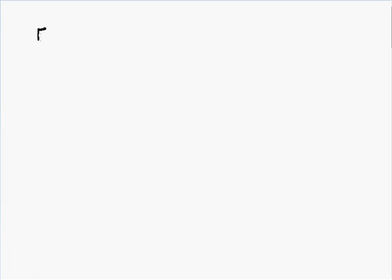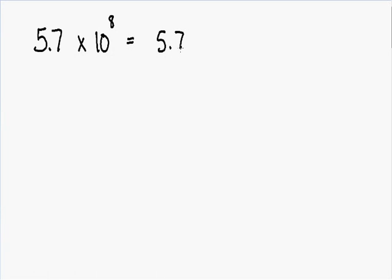First, let's take a number that is in scientific notation and convert it into a regular number. Let's say we have 5.7 multiplied by 10 with an exponent of 8. Whenever you multiply by 10, you're actually moving the decimal point one time to the right. Since we're multiplying by 10 eight times, we're actually moving the decimal 8 times to the right. So we have our number 5.7 and we're moving the decimal point 8 times to the right.